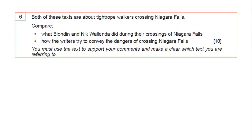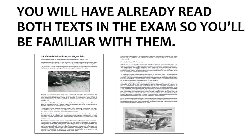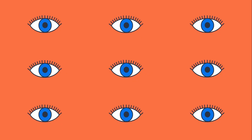Be clear which text you're talking about. An easy way to do this is to use the writers' names. If it's not obvious to the examiner which text you're talking about, you're going to get zero out of ten. You must be clear and use the writers' names. You've already read both texts in the exam by the time you get to question six, so you'll be familiar with them — it should be skimming rather than reading the whole thing again. And don't worry if you feel like you might be repeating points you've already written in past questions — as long as it's relevant, you can write it again.